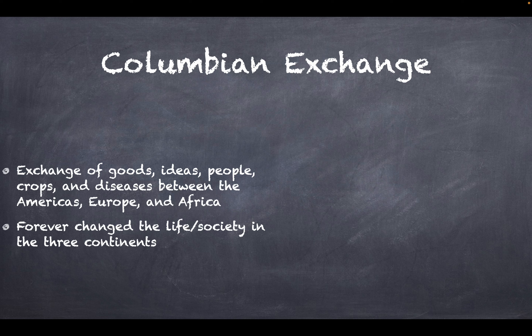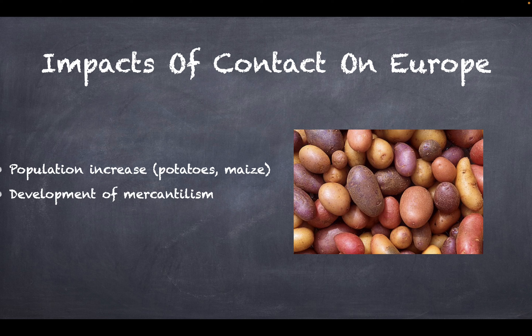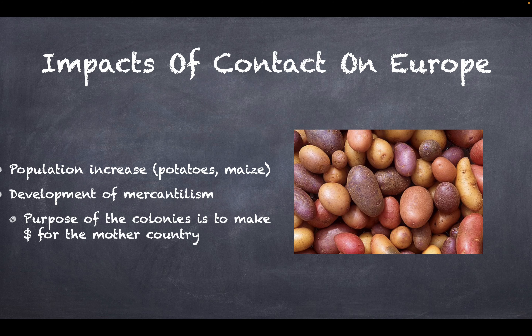The impacts of contact on Europe included a population increase, because potatoes and maize from the Americas introduced more food — a surplus — leading to population growth. We'll also see the development of mercantilism, whose purpose was to make money for the mother country.